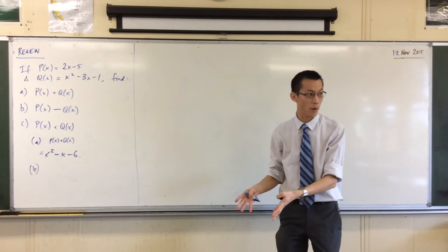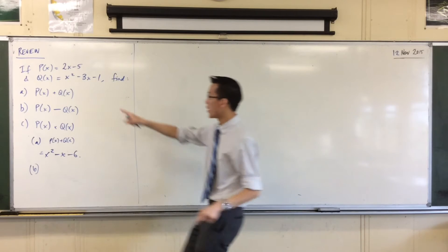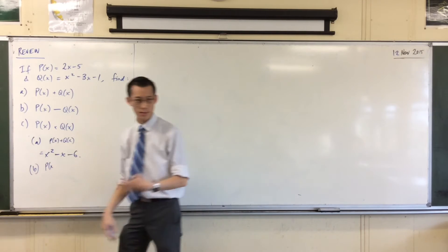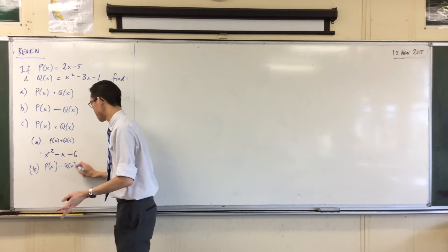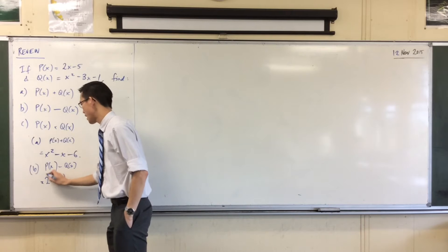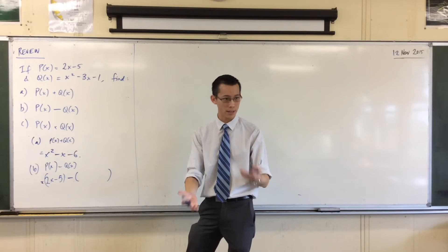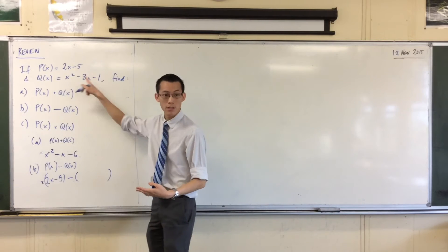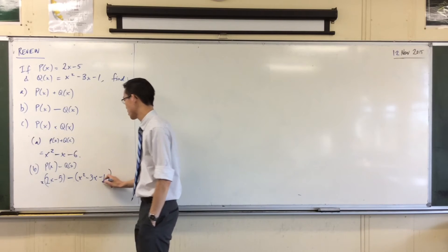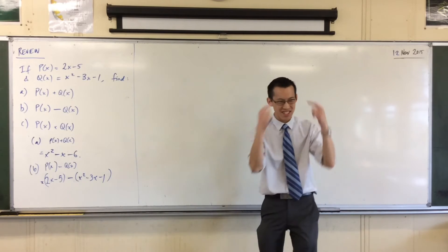How many X squared terms will I end up with? It'll be negative 1. Remember, I'm going P take away Q. It's worth writing this out — I'm going to write it this time. P take away Q: I'll just do a straight substitution. That's equal to 2X minus 5, that's P. And I'm going to subtract — the brackets here are enormously helpful because they help me work out what to do with the signs. So I've got take away X squared minus 3X minus 1.